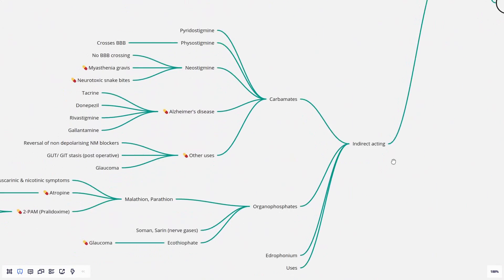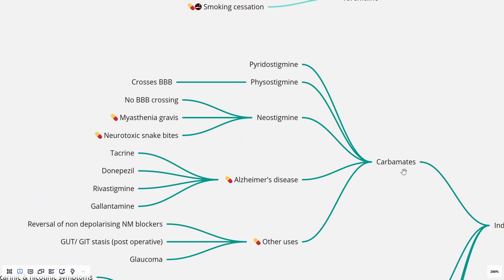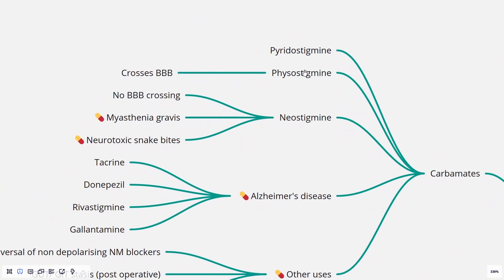Now coming to the indirectly acting drugs. Broadly, they are comprised of the carbamates and organophosphates. We'll talk about edrophonium and uses separately. Carbamates: we have pyridostigmine, physostigmine, and neostigmine. The difference between physostigmine and neostigmine is that physostigmine crosses the blood-brain barrier, whereas neostigmine is a quaternary compound; it has a charged ammonium ion. It does not cross the blood-brain barrier easily, and for this reason, it's preferred for myasthenia gravis and certain neurotoxic snake bites. Pyridostigmine also has actions similar to neostigmine.